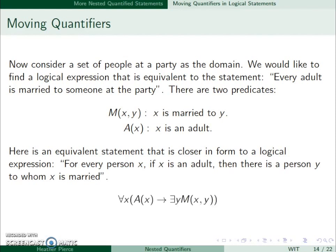So for every person x, it's going to be ∀x. If x is an adult, so if A(x), then there is a person y for whom x is married. So we have ∃y such that M(x,y).